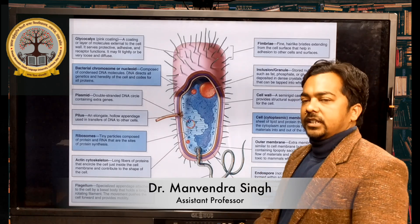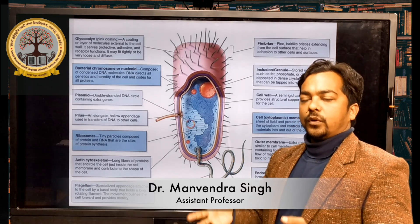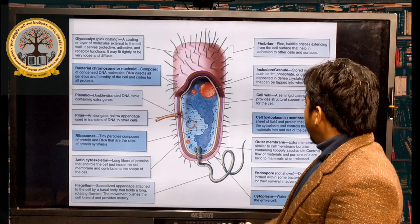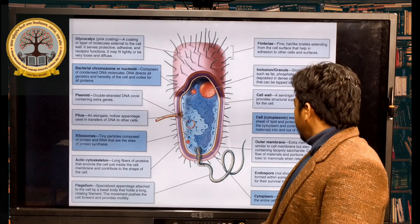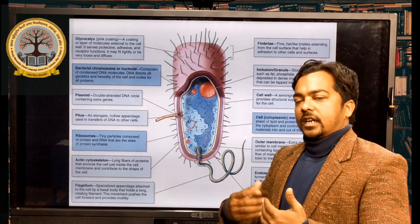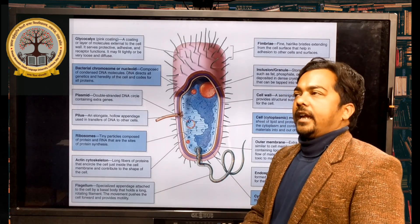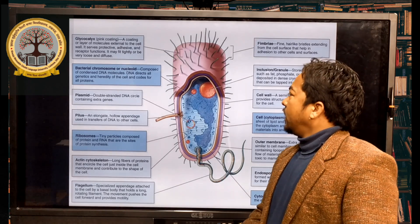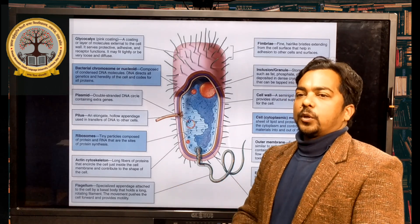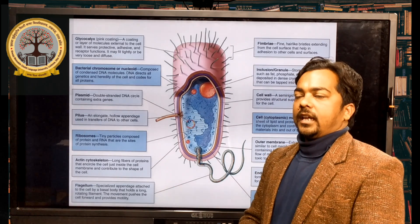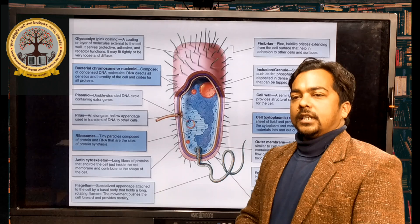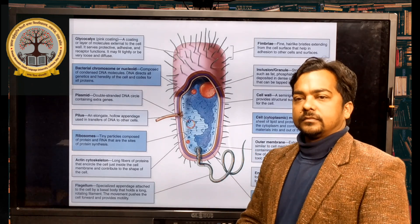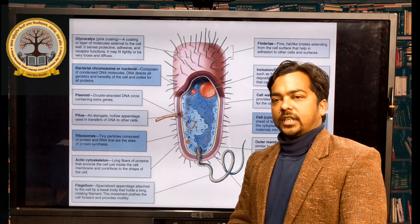Bacteria cell wall is a semirigid structure which gives a protective form to the cell. Outer membrane, endospore, and cytoplasm — we will discuss these in the next session. Thank you, dear students.